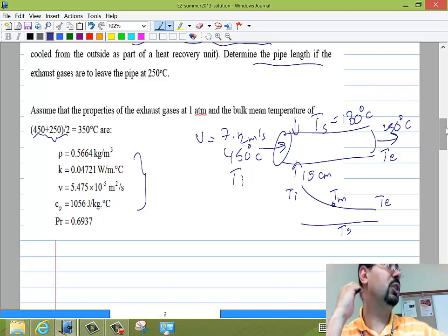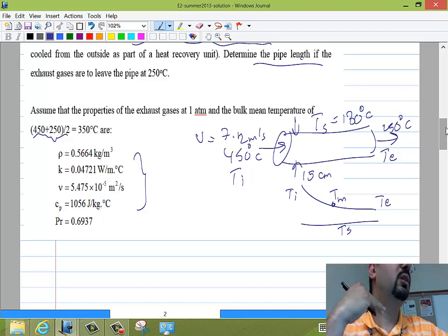So the solution in your head should really start backwards. When you think about the solution, you should say he wants the length. Where is that length? It's in the area. I better get him the area. So that would actually be the last step that we're going to write, that the area is πDL and from that we will get the length. And where am I going to get this area? It must be in the Q equal H A delta T. So I better have my delta T. I have it. I better have my H.